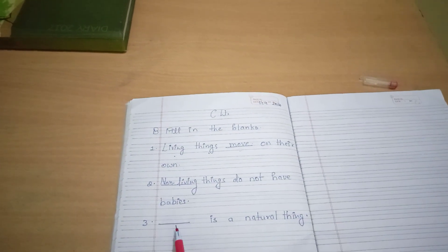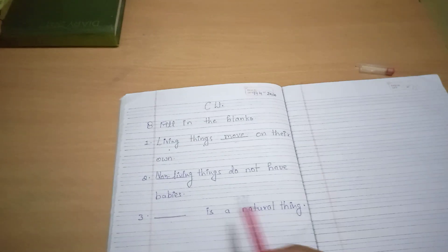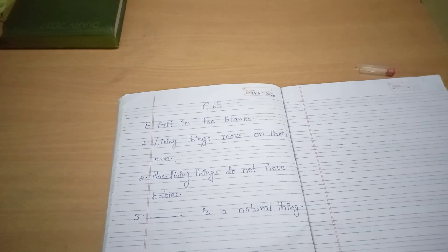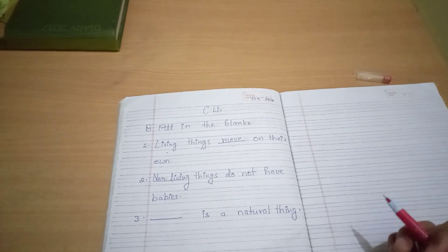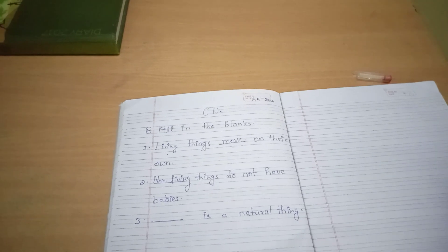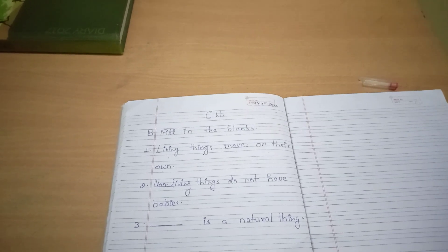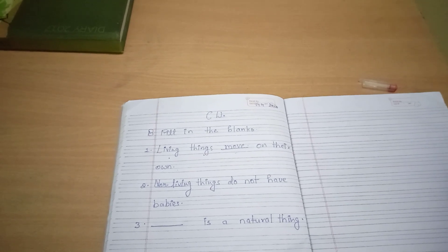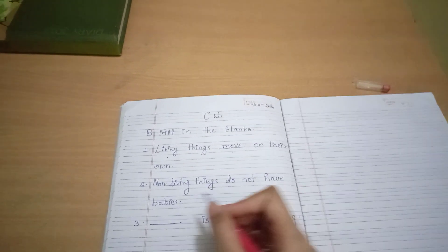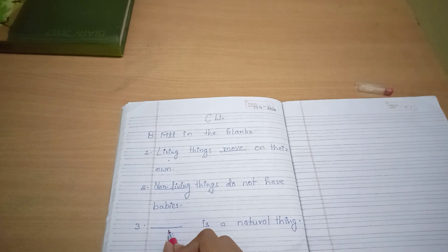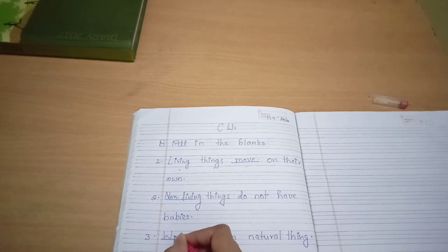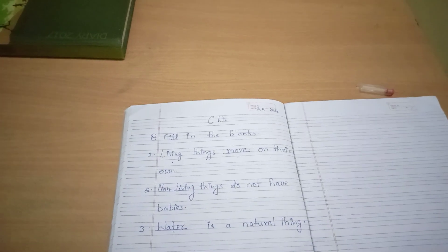Now number three, dash is a natural thing. So यहां पे कोई भी एक natural thing का नाम लिखना है. So मैंने बहुत सारी natural things की example बताये थे, जैसे sun, water, cloud, mountain and many more else. So यहां पे कोई भी एक example लिख देना है. So हम यहां पर क्या लिख देंगे? Water. Okay?